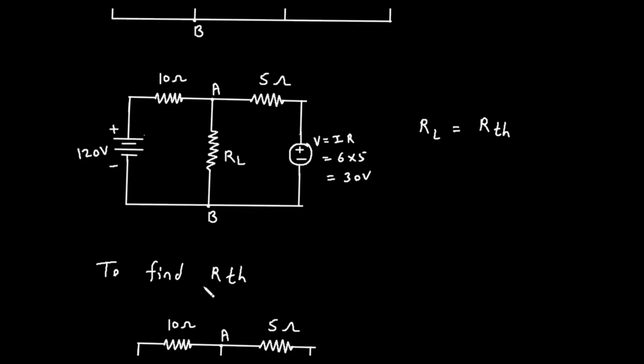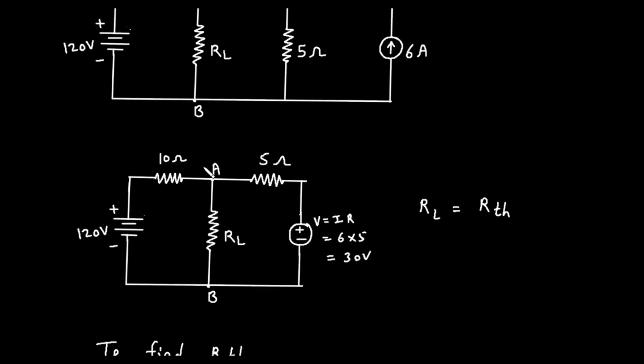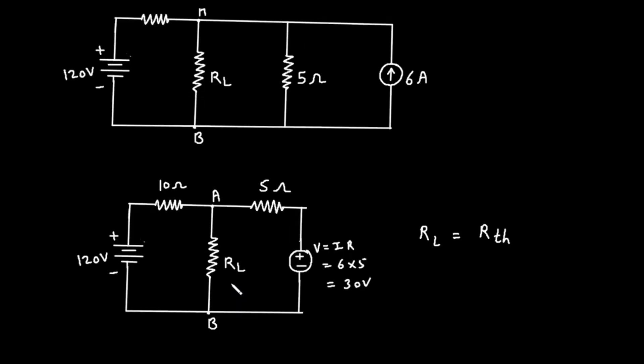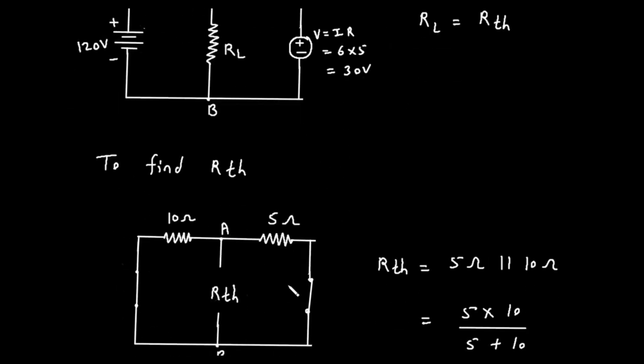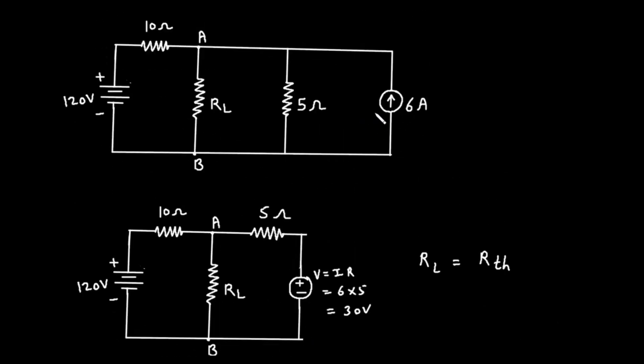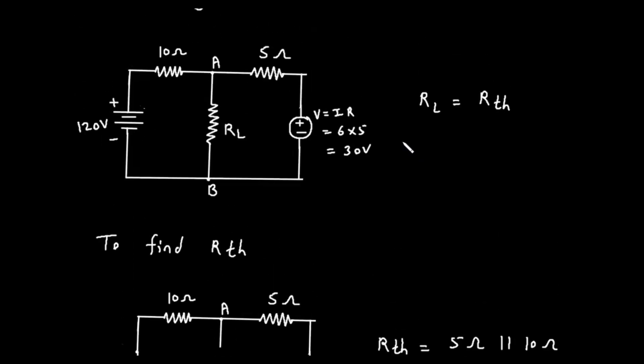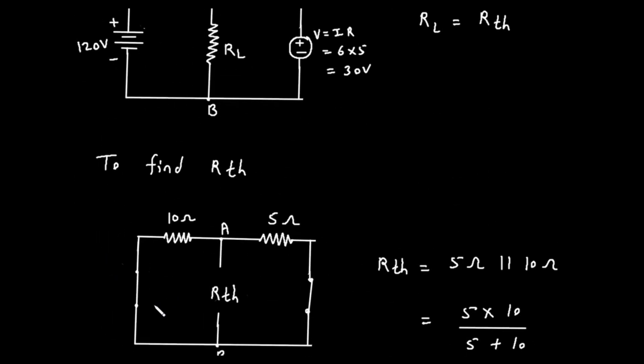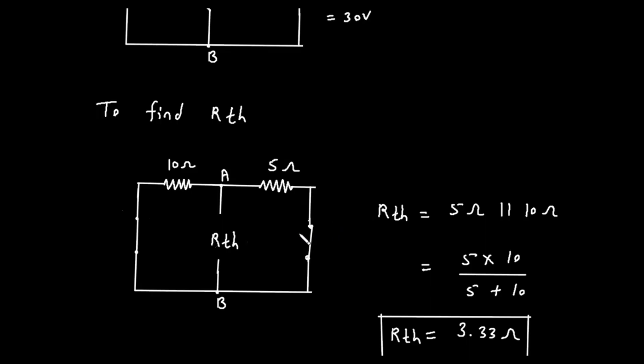So, our first step is to find RTH. To find the Thevenin resistance, RTH, we need to look back into the terminals A and B where the load resistor was connected. The procedure requires us to turn off all the independent sources in the circuit. For a voltage source, turning it off means replacing it with a short circuit, which is essentially a wire with zero resistance. For a current source, turning it off means replacing it with an open circuit, which is a break in the wire. So, let's modify our original circuit. The 120 volt voltage source is replaced by a short circuit. The 6 ampere current source is replaced by an open circuit. After making these changes, we look at the resistance between terminals A and B. We can see that the 10 ohm resistor and the 5 ohm resistor are now connected in parallel with each other across these terminals.